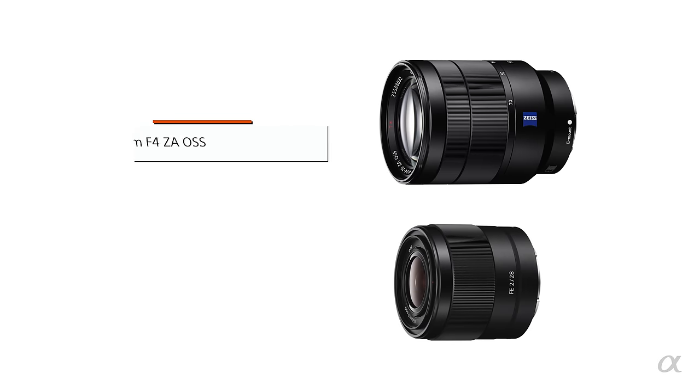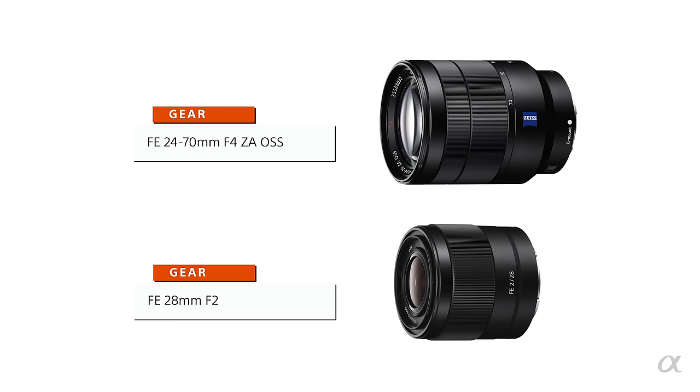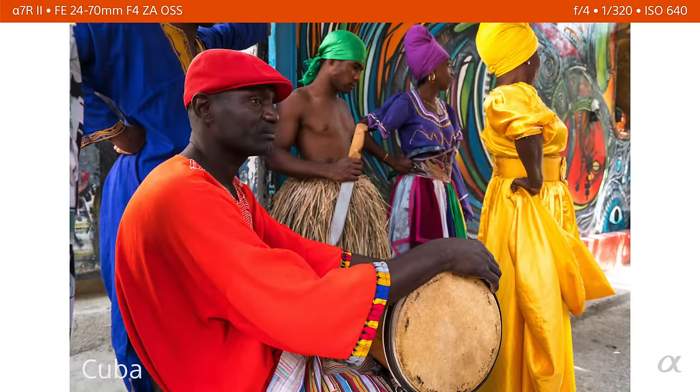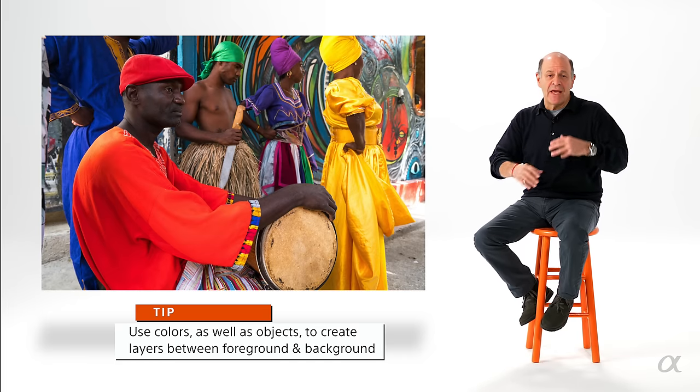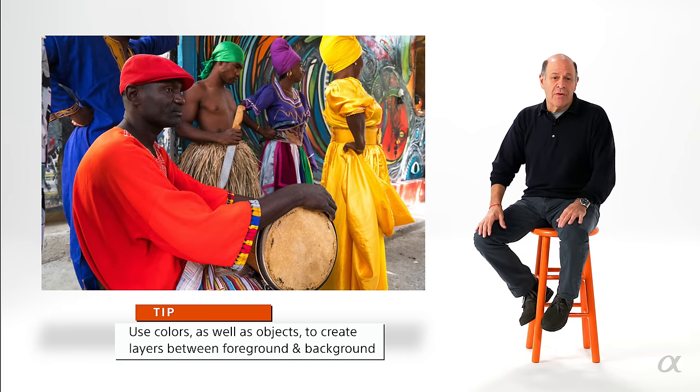28 millimeters is my sweet spot for a lens length when I'm trying to do people and combine them with the background. And I could do it either using the 24 to 70 or if it's night and I need a faster lens, I'll switch to the 28 f2 prime. I saw this band playing. I love the color red on the guy with the drum. So I got close to him with a wider lens and still had the colors of the rest of the group in the background. So I was able to combine this foreground red with these other colors in the background. It gave some depth to my photo.